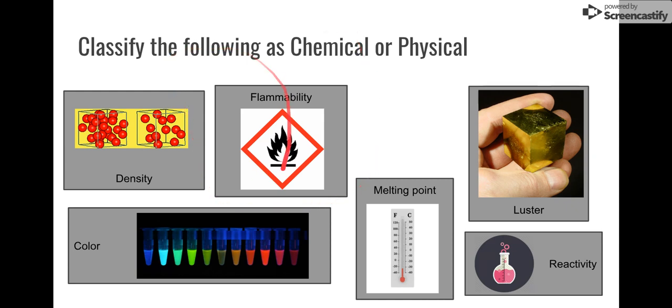Flammability, that's a chemical change. It's chemical because when we set something on fire, we change the chemical structure of what was there. Like think lighting a piece of paper on fire. You're not going to end up with paper in the end. You're going to end up with something completely different.